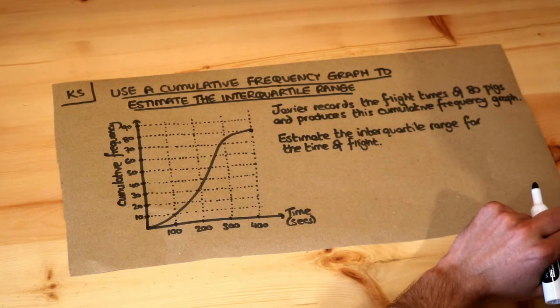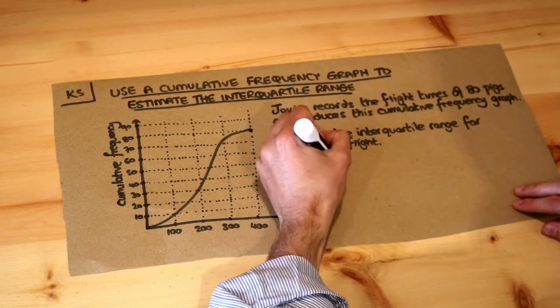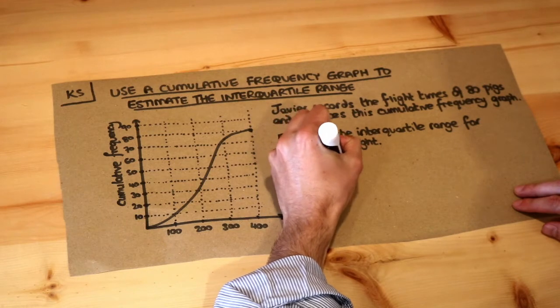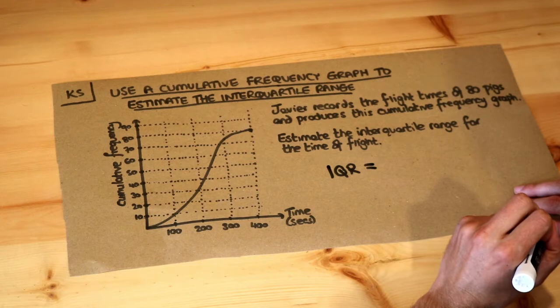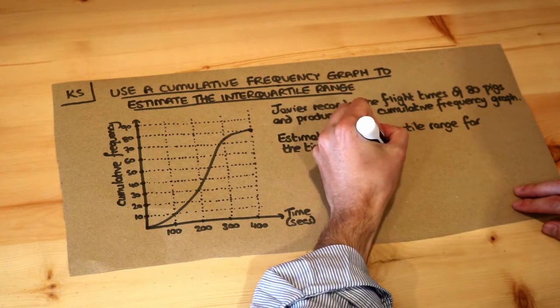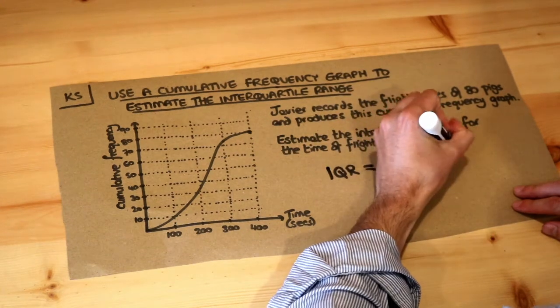Now do you remember what the interquartile range is? The interquartile range or IQR for short is the difference between the upper quartile and the lower quartile. So it's the upper quartile minus the lower quartile.